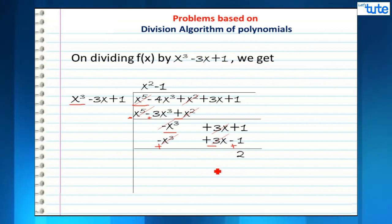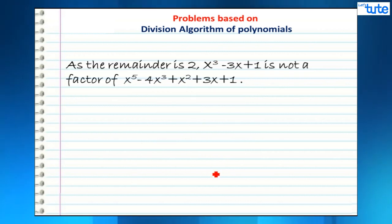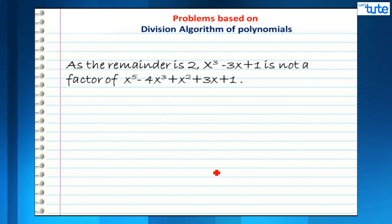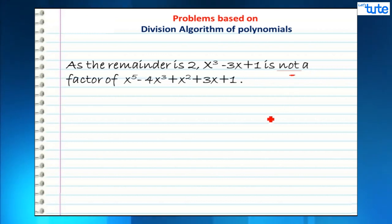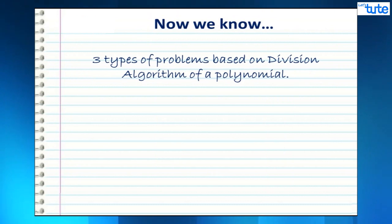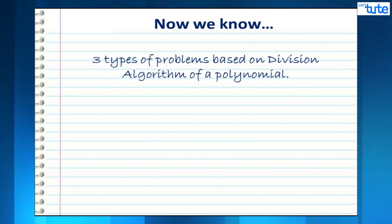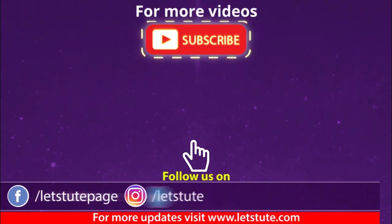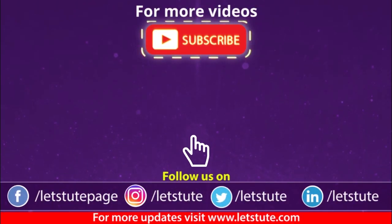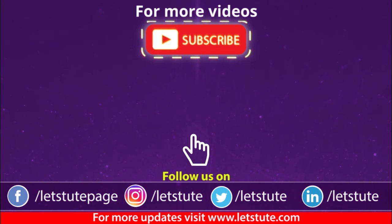Since the remainder is 2, x³ - 3x + 1 is not a factor of x⁵ - 4x³ + x² + 3x + 1. We now know three types of problems based on the division algorithm of polynomials. For more problems based on polynomials, please visit www.pledgestude.com.